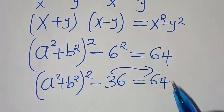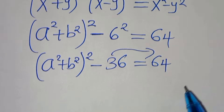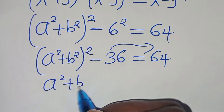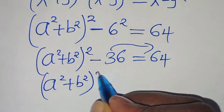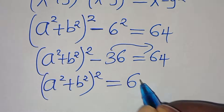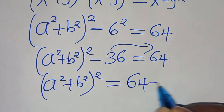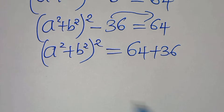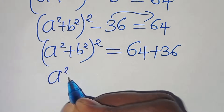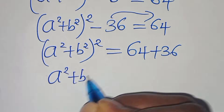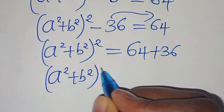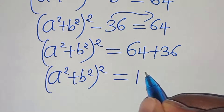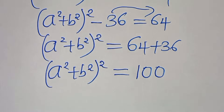Moving minus 36 to the right-hand side, we have (a squared plus b squared) squared equals 64 plus 36, which equals 100.